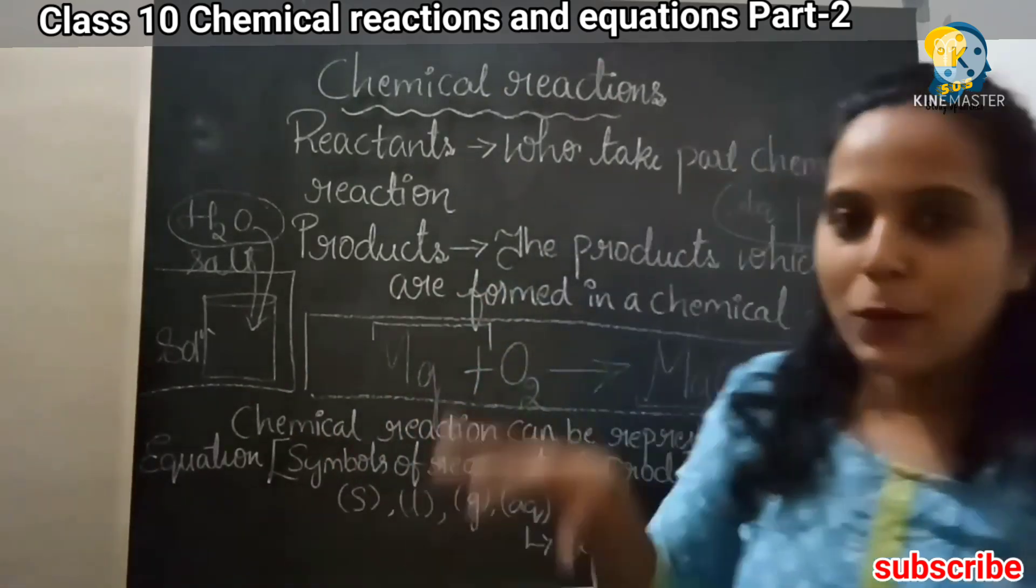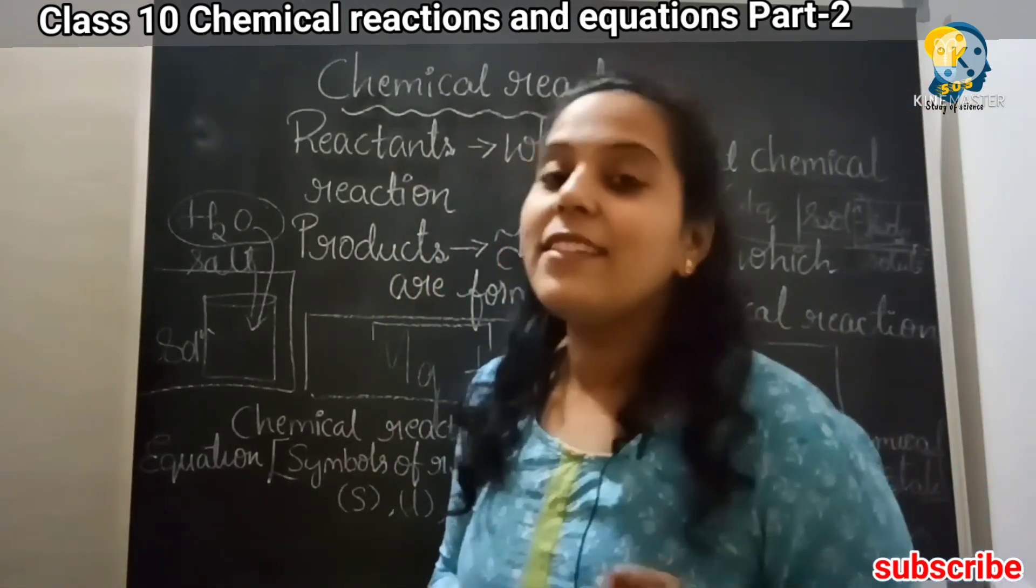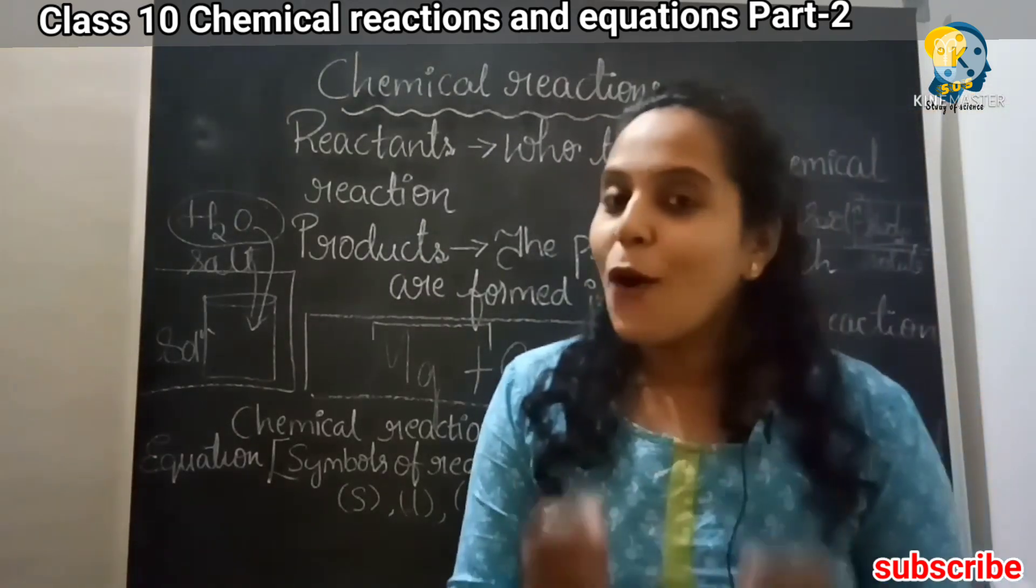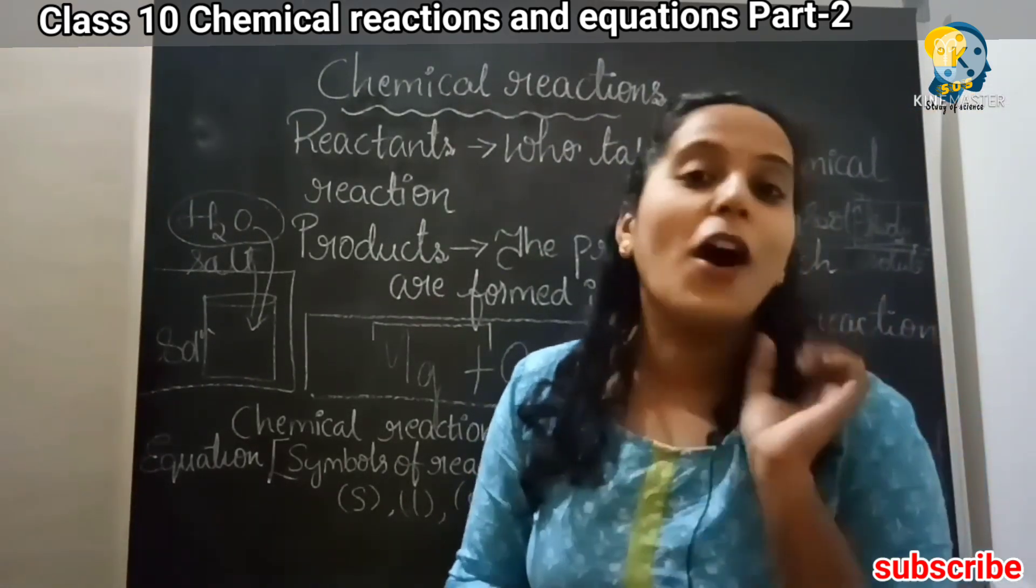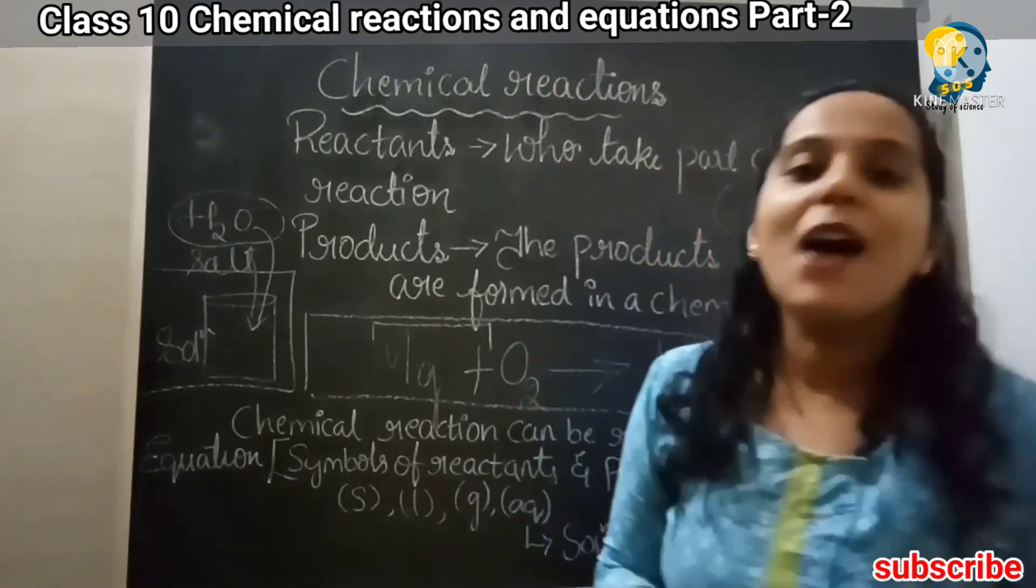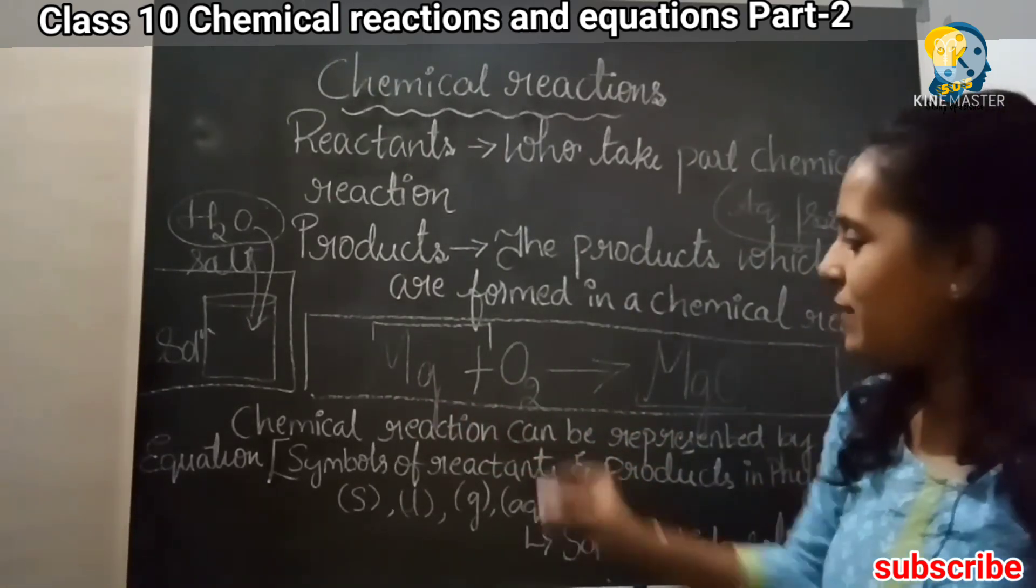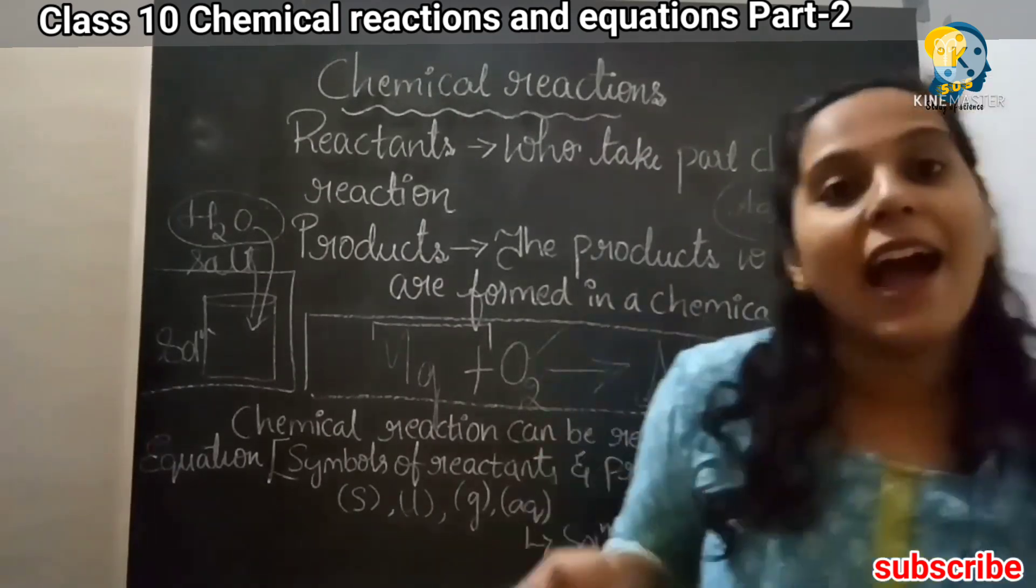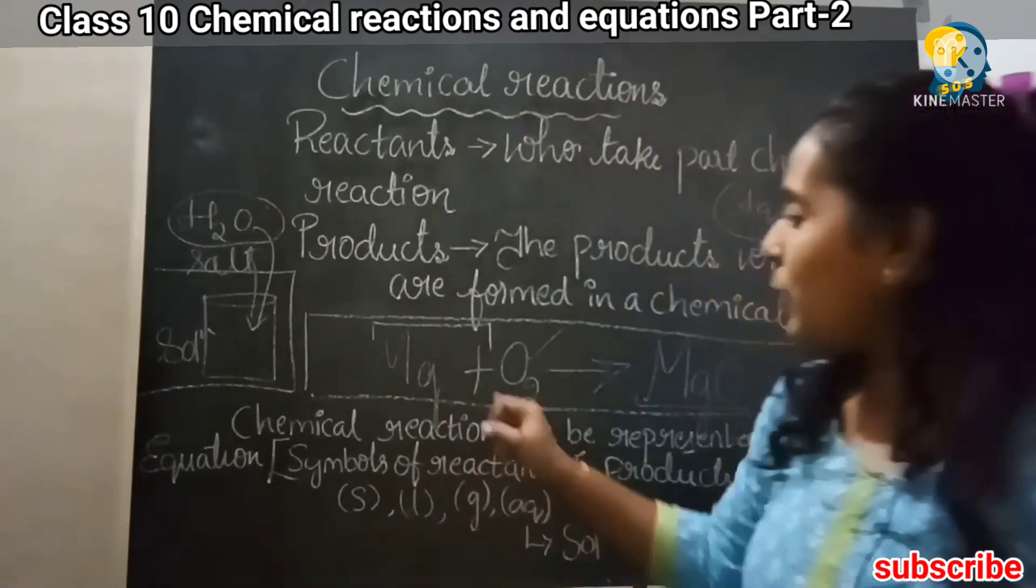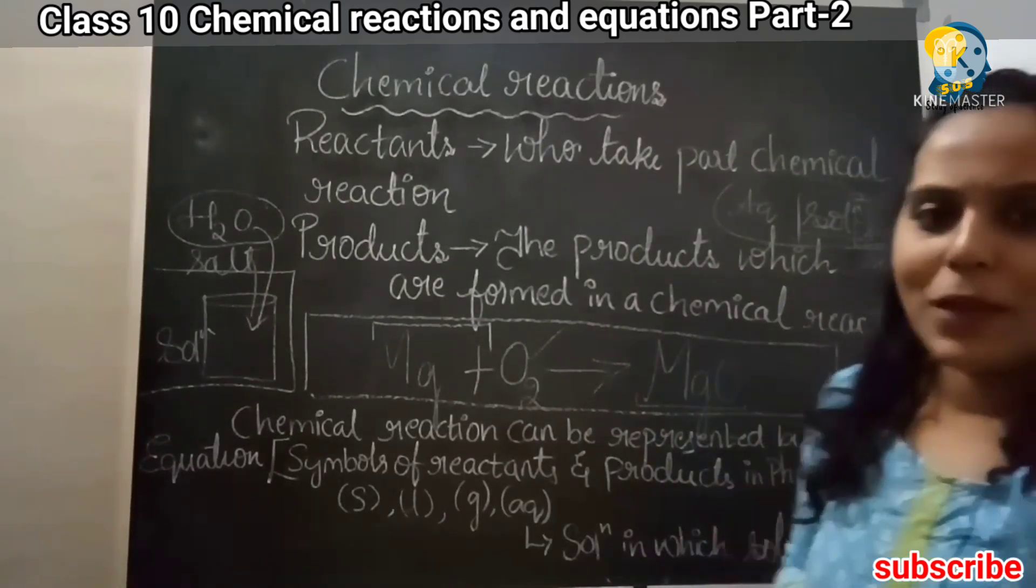Before going to the next concept, let me once quickly revise this. In chemical reactions, there is the reactant and the product. Reactant is the substance which is undergoing reaction. Products are the substances which have been formed as a result of chemical reaction. When some reactants react, a new substance is formed, that substance is the product. We got an example here. Magnesium is burning in the presence of air, that means in the presence of oxygen. Because if anything has to be burned, oxygen is very important. As a result of it, we got magnesium oxide.